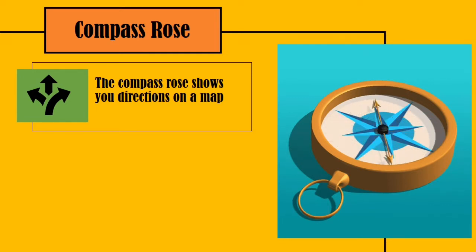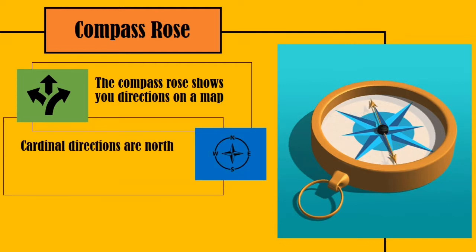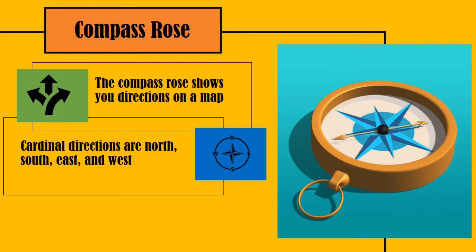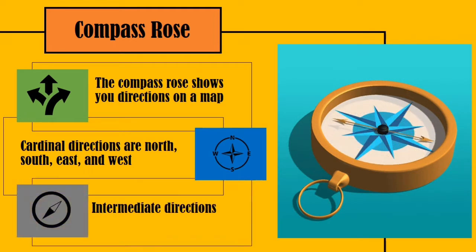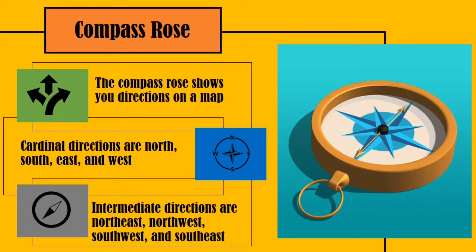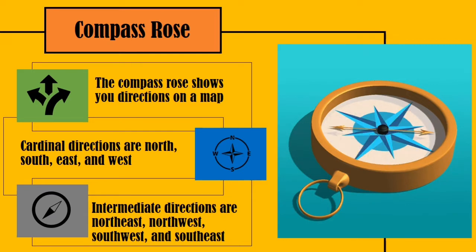These cardinal directions include the north, the south, the east, and the west. And the intermediate directions are the northeast, the northwest, the southwest, and the southeast.